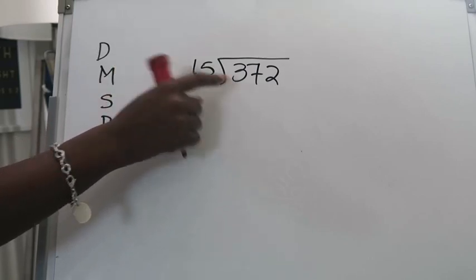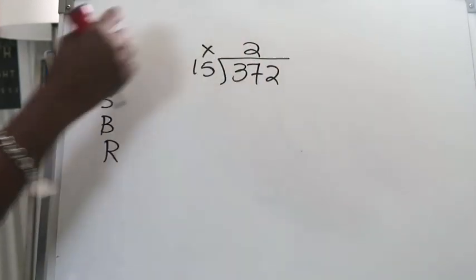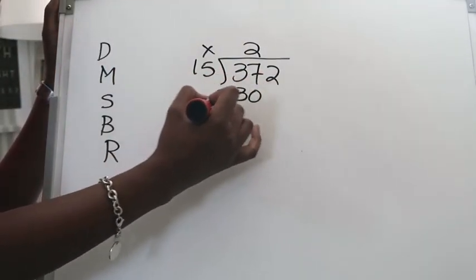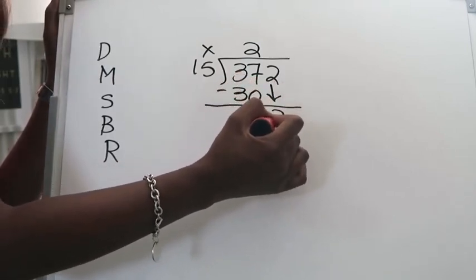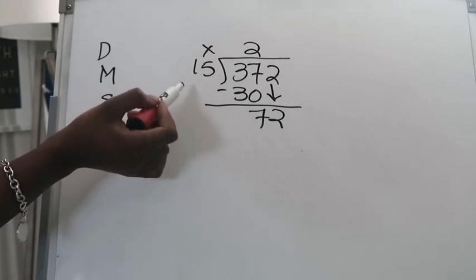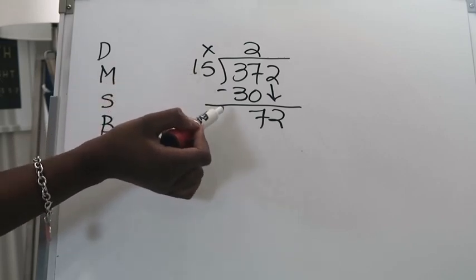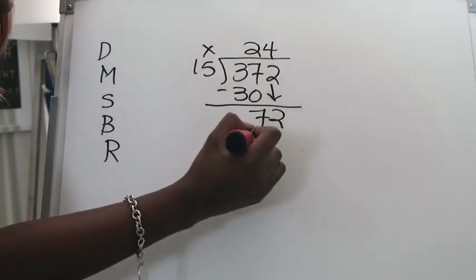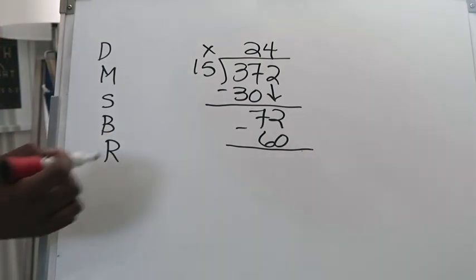So here we have 372 divided by 15. I know that 15 can't go into 3 but I know that 15 can go into 37 two times. I'm going to now multiply 2 times 15 is 30. Now I'm subtracting 37 minus 30 is 7. Then I'm going to bring down my 2 and I know that that is clearly not a remainder because 72 is larger than my divisor which means I'm going to start this process all over. 15 can go into 72 four times.